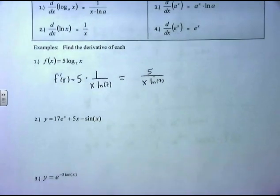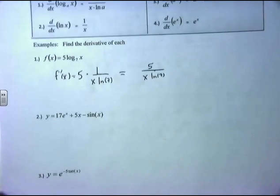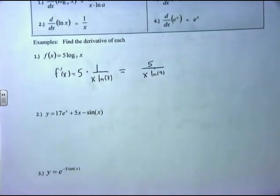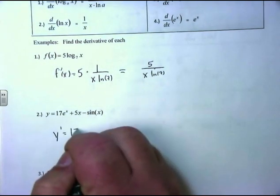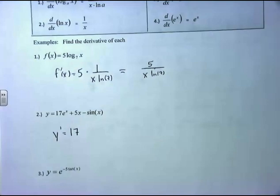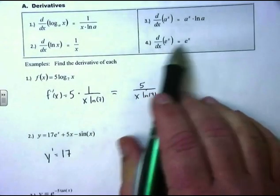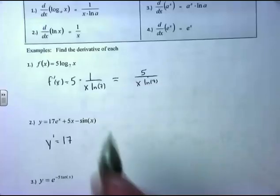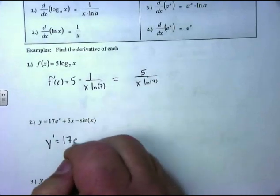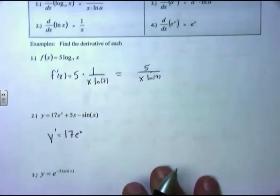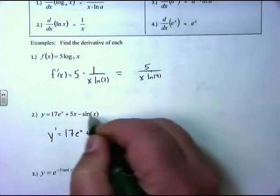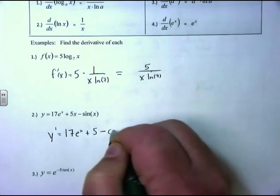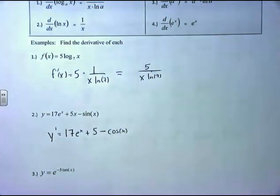Example 2: if y equals 17e to the x plus 5x minus sine of x, what's the derivative? y′ equals 17 — constant holds over — times the derivative of e to the x, which is e to the x, plus the derivative of 5x which is 5, minus the derivative of sine of x which is cosine of x. And there's the derivative.